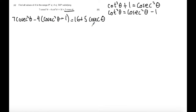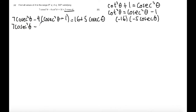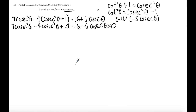Now I'm going to expand and simplify. I'll bring the terms on the right-hand side to the left-hand side, subtracting 16 and subtracting 5cosecθ from both sides. So we get 7cosec²θ - 4cosec²θ + 4 - 16 - 5cosecθ = 0, which tidies up to 3cosec²θ - 5cosecθ - 12 = 0.